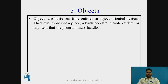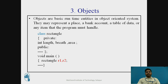Objects are the basic run-time entities in object-oriented systems. They may represent a place, a bank account, a table of data, or any item that the program must handle. For example, here class is a keyword and rectangle is a class name. Then, as discussed, we have private and public sections. In private, data members such as integer length, breadth, and area are declared.